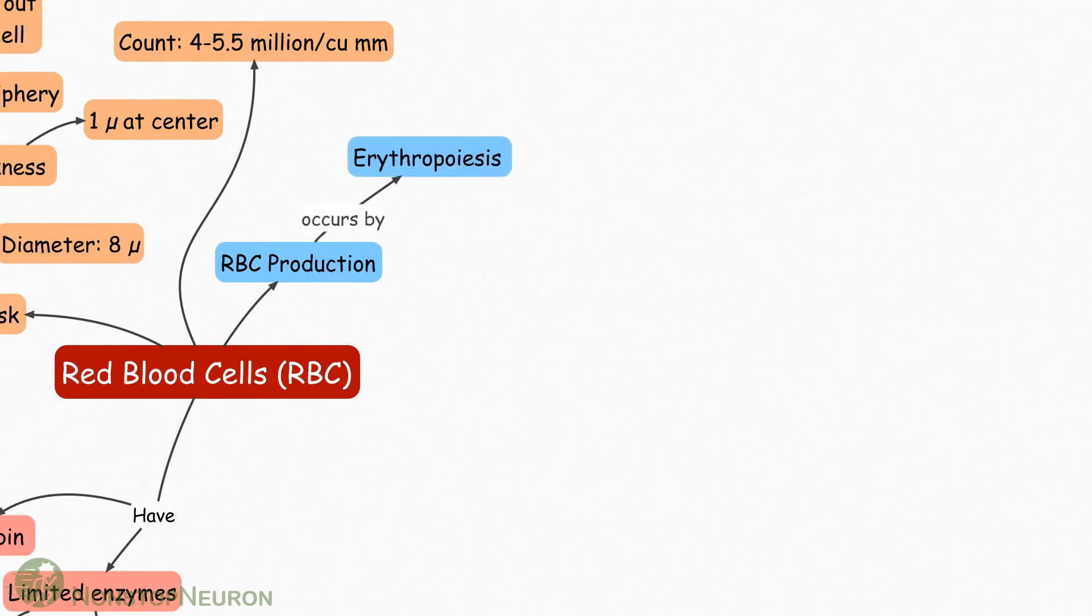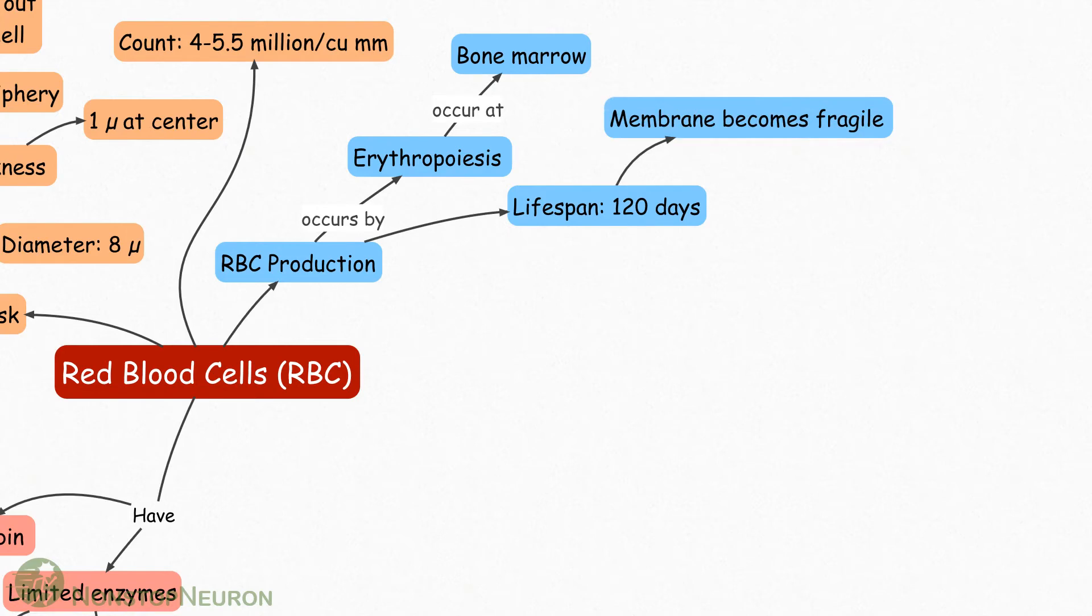RBCs are produced by erythropoiesis at bone marrow. Lifespan of RBC is about 120 days. During this period, membrane of RBC eventually becomes fragile.